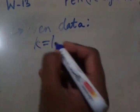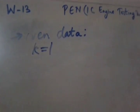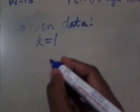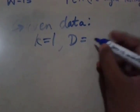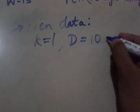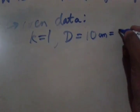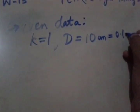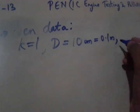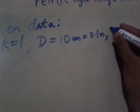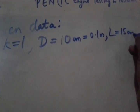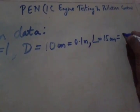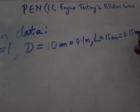We have been given single cylinder, so k is equal to 1. Then we have been given the cylinder diameter that is 10 cm, so we can convert it into meter, so it is 0.1 meter. We have been given that piston stroke that is capital L is 15 cm, so this will be 0.15 meter.